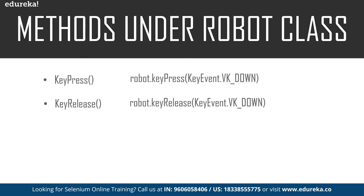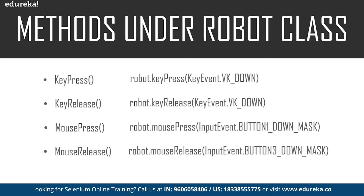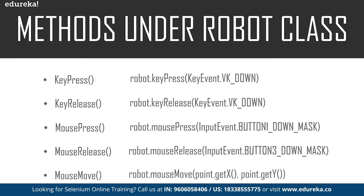Those are the methods used to control keyboard functions. Now let's take a look at methods used to handle mouse functions. We have the mousePress method, which is used to press the left button of the mouse. Then we have the mouseRelease method, which is used to release the pressed button of the mouse. Finally, we have the mouseMove method, which moves the mouse pointer to the X and Y coordinates of an element passed into this method.